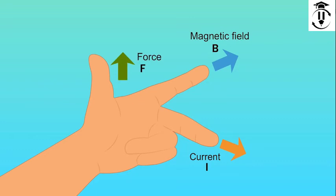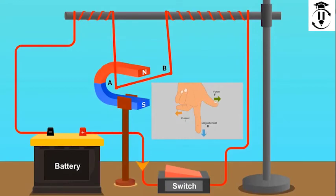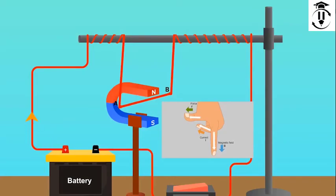If we apply this to our activity, we will understand it better. If the electric current was in this direction and the magnetic field was in this direction, then the force would be exerted in this direction. In the same way, if the direction of the current was changed, then the force changed its direction too.